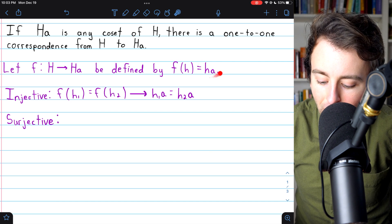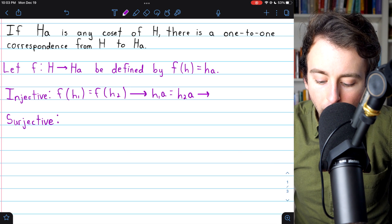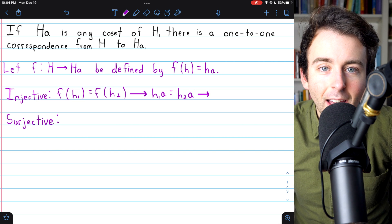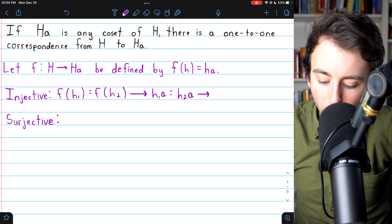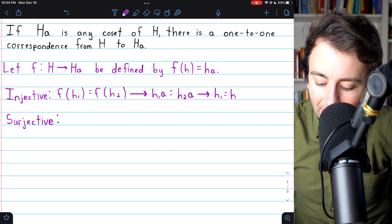Again, this is just by definition of the function. But then, this immediately gives us the result we want. Multiplying by a inverse on the right side, on both sides of the equation, that just leaves us with h₁ equals h₂.